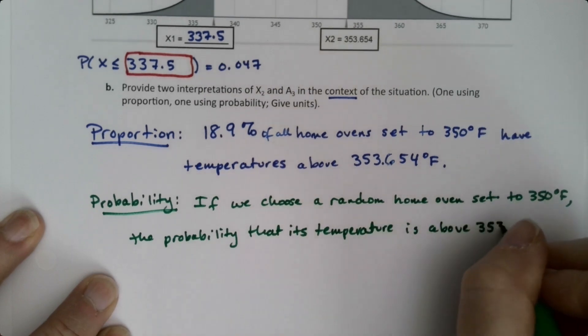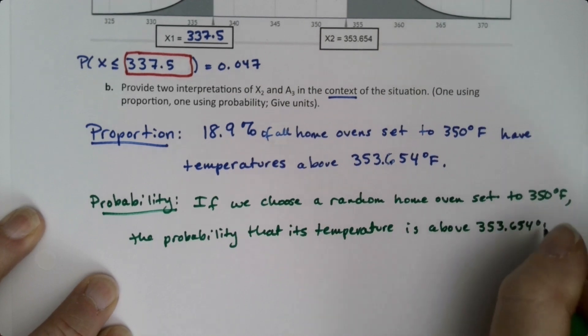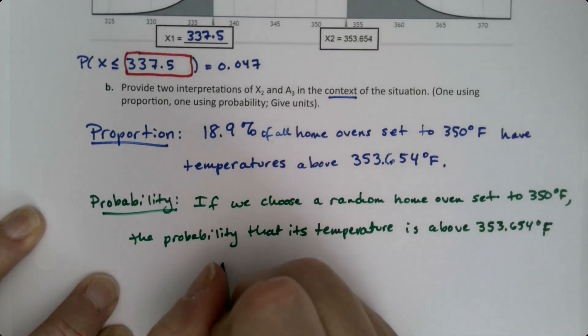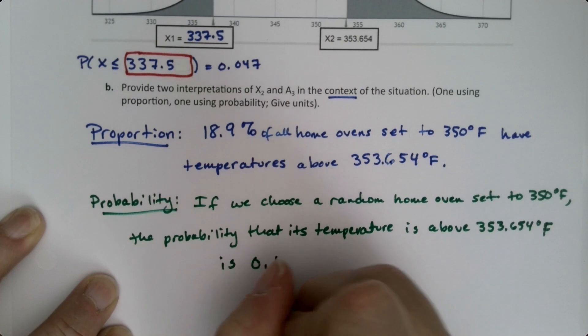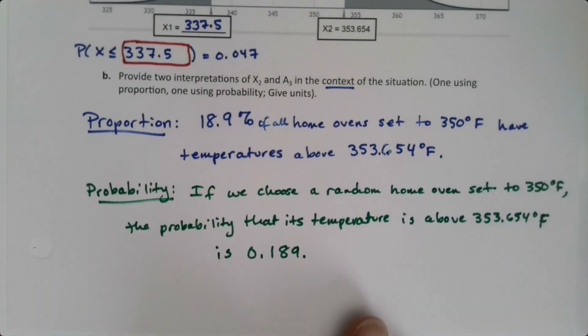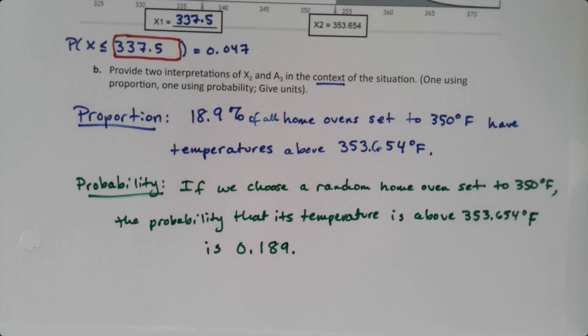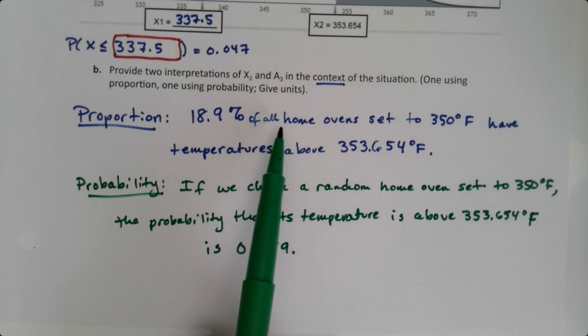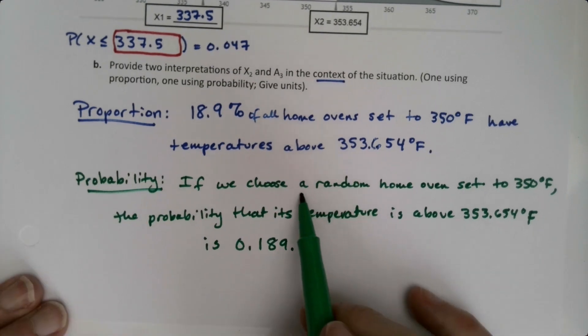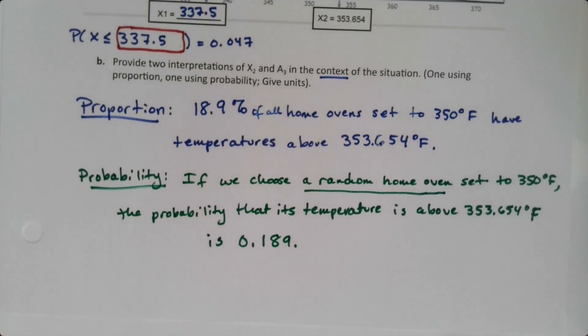is 0.189. They're saying the same thing. It's just the top one is really talking about proportion of the whole—this percentage of all the home ovens—as opposed to selecting a single random oven. The chances that it has a temperature higher than 353.654 is 0.189.